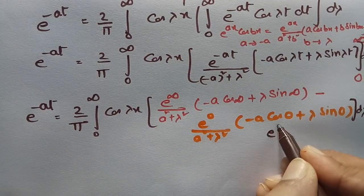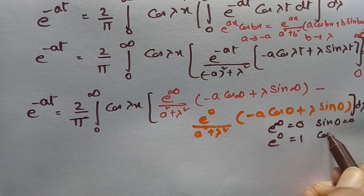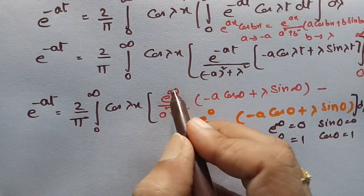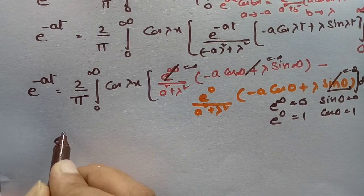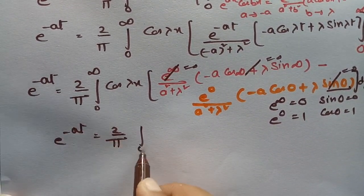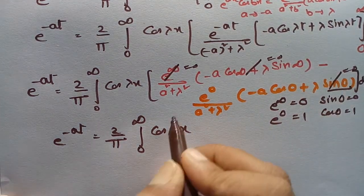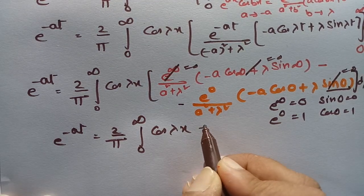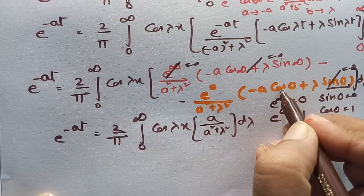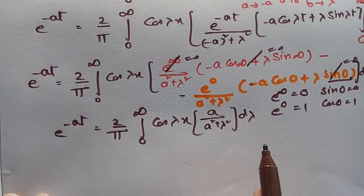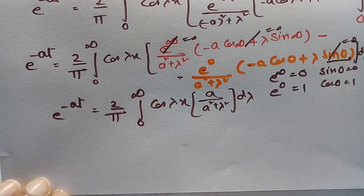We know that e^(−∞) = 0, e^0 = 1, sin(0) = 0, and cos(0) = 1. Since e^(−∞) = 0, the entire upper-limit term vanishes. For the lower limit, sin(0) = 0, so that term also drops. What remains — with minus of minus giving plus — is a/(a² + λ²). Therefore e^(−ax) equals (2/π) times the integral from 0 to infinity of cos(λx) times a/(a² + λ²) dλ.